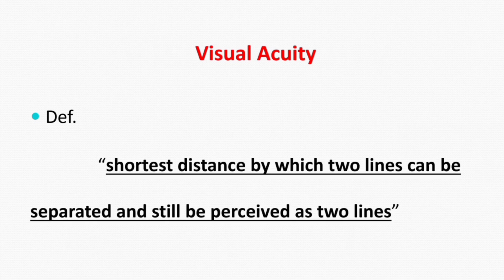Visual acuity simply means how accurately we can see an object, or the degree to which the details and contours of the object are perceived. Physiologically, visual acuity can be defined as the shortest distance by which two lines can be separated and still be perceived as two lines.